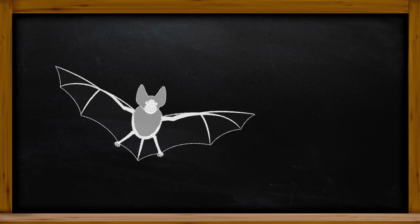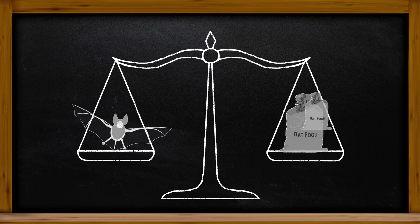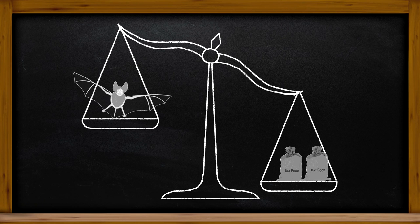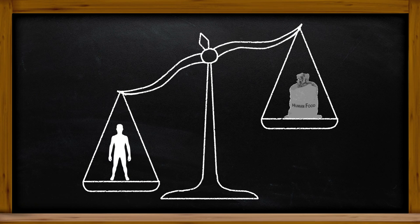A bat would eat about its weight perhaps once or twice a day in order to be able to fly. So that's the amount of food intake that a bat would take. On the other hand, humans do not usually eat their weight in food every day. In fact, they eat a lot less.